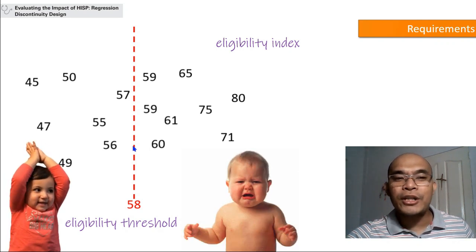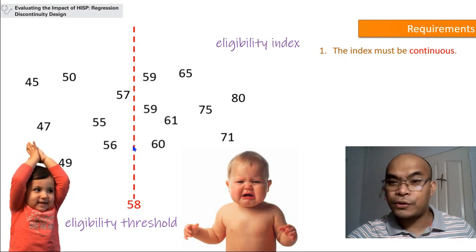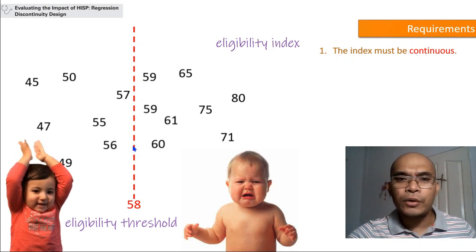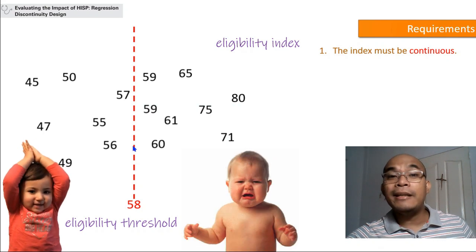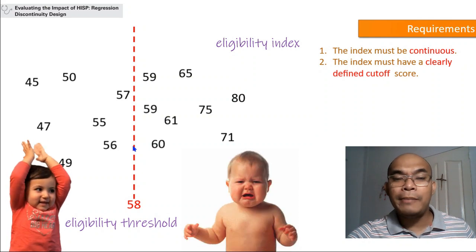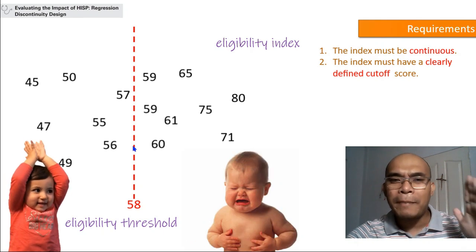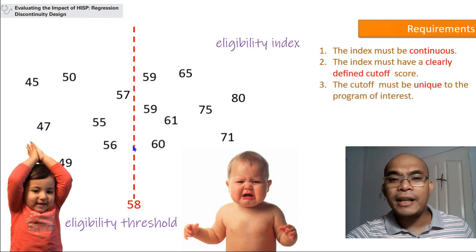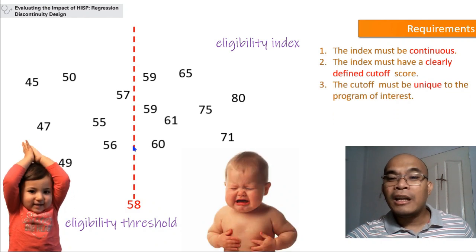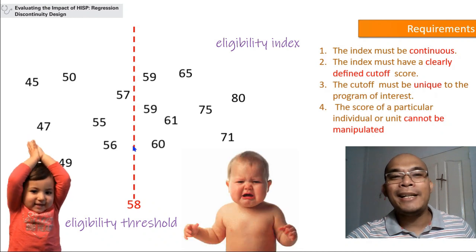We can use Regression Discontinuity Design when four requirements are met. Number one, the index must be continuous. Number two, the index must have a clearly defined cutoff or eligibility threshold — it cannot be adjusted ambiguously between 58 and 58.5, the cutoff must be clear. Number three, the cutoff must be unique to the program of interest. Number four, the score of a particular individual or unit cannot be manipulated — this is a very important rule.